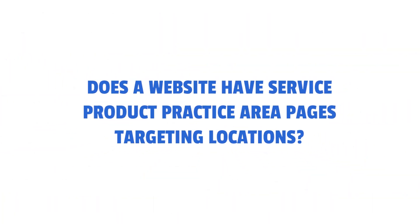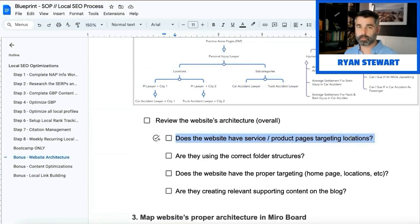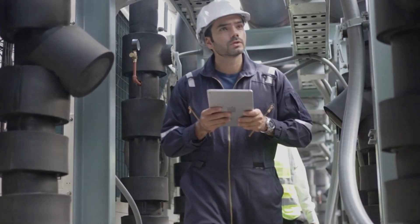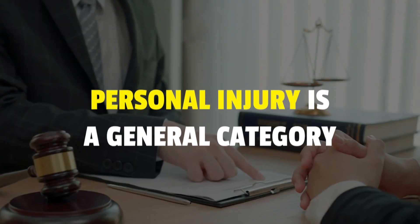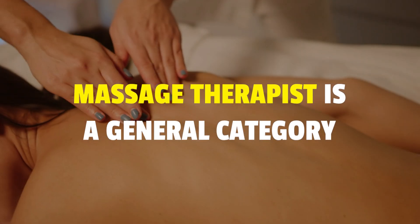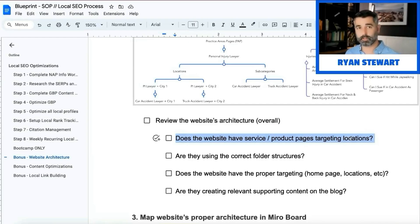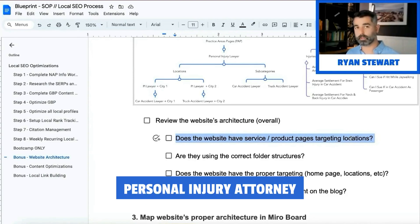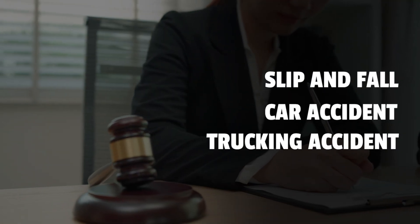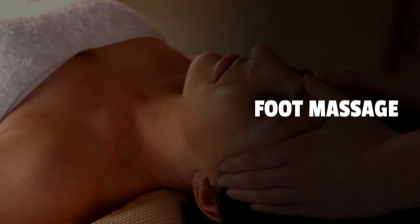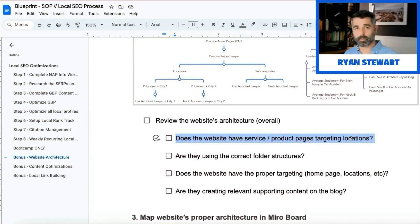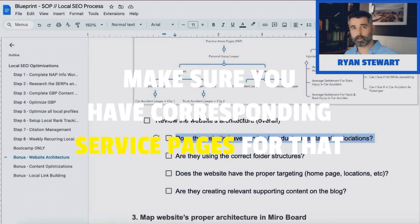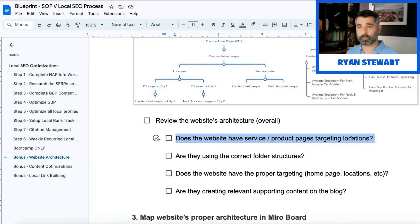Let me break that down. If you're an HVAC company in Miami, HVAC is a general category. Personal injury is a general category. Massage therapist is a general category. But there are going to be sub-services that people are searching for within that category — AC repair, duct cleaning, etc. For a personal injury attorney: slip and fall, car accident, trucking accident. For a massage therapist: foot massage, head massage, etc. So you want to do keyword research to understand what people are searching for.